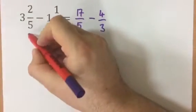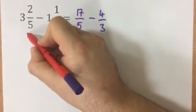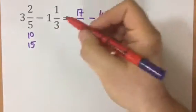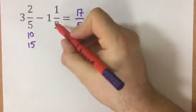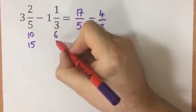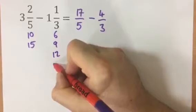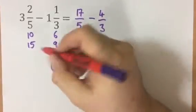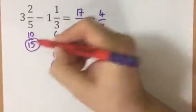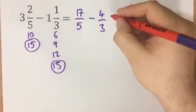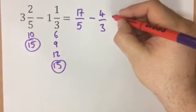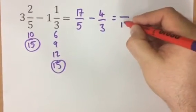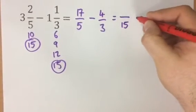So if we list the multiples of 5 here, it's 5, 10, 15. Multiples of 3 are 3, 6, 9, 12, and 15. So now we've got our lowest common multiple, we can rewrite these two fractions as fractions out of 15.